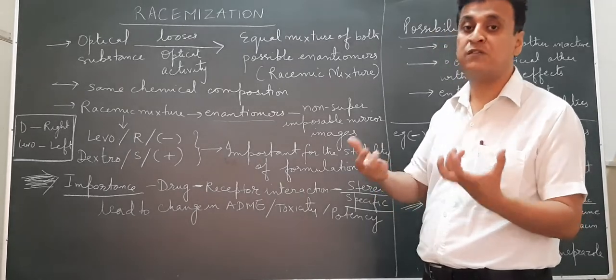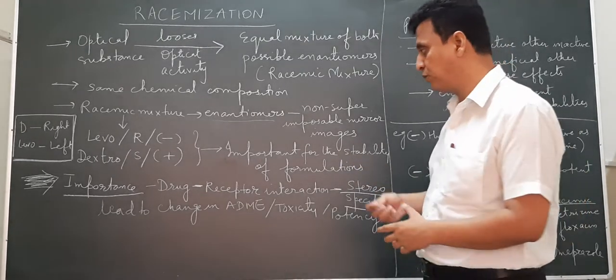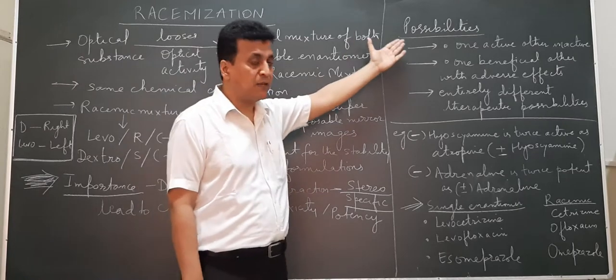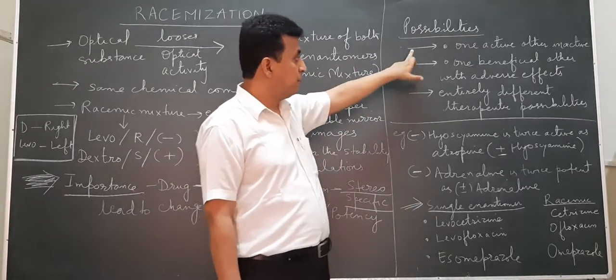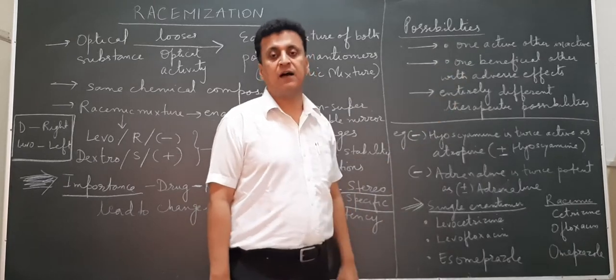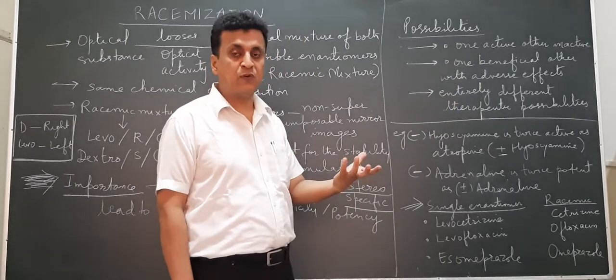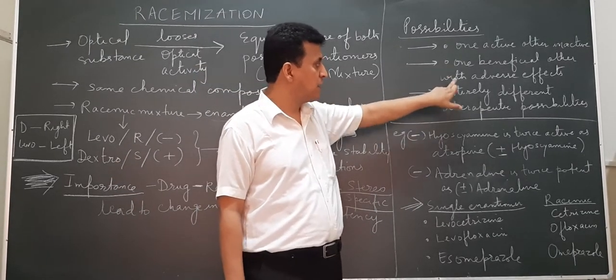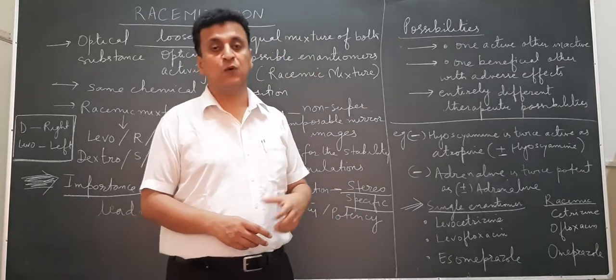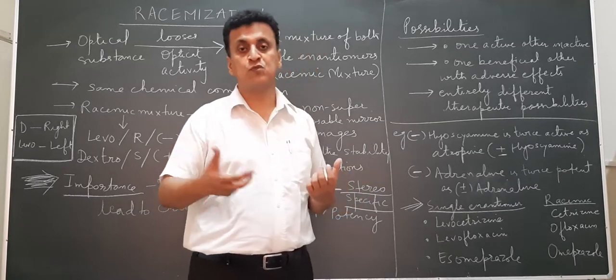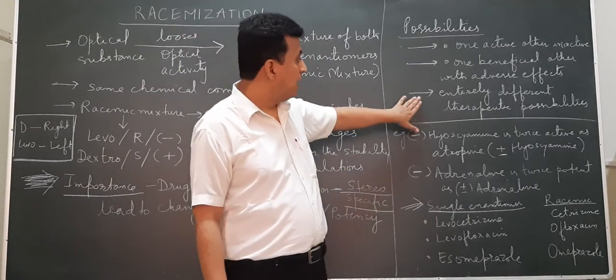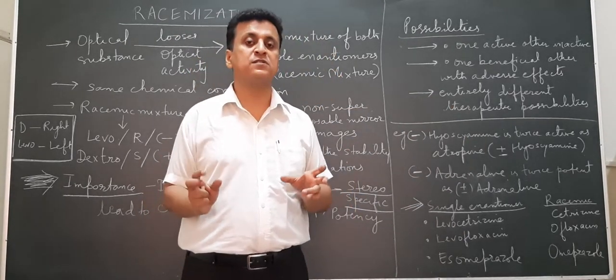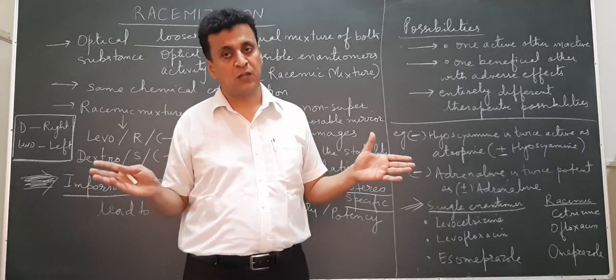This is why we study racemization in pre-formulation studies. When racemization occurs, there are several possibilities. First, one form is active and the other is inactive. Second possibility: one is beneficial, the other may have some adverse effects. And the third possibility is that both have entirely different therapeutic properties - the two enantiomers have completely different therapeutic properties.